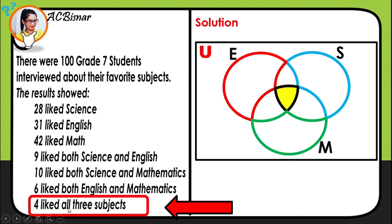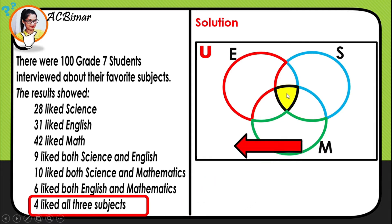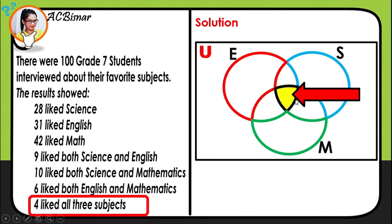We start from the innermost region: 4 students like all three subjects. Among the 100 students, 4 of them like English, Science, and Math. We write 4 at the intersection of all three circles.